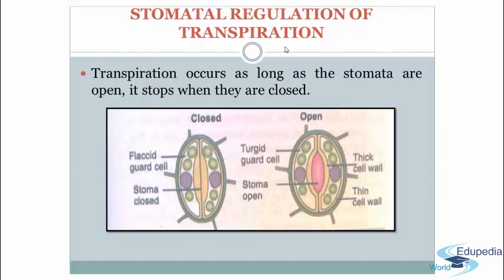Regarding stomatal regulation of transpiration: transpiration occurs as long as the stomata are open and stops when they are closed. You can see the closed stomata, where flaccid guard cells cause the stomata to close, and in the other section you can see the open stomata, where the guard cells are turgid and the stomata is open.